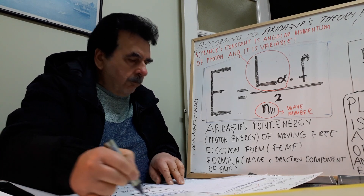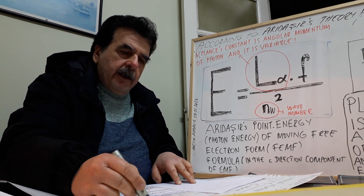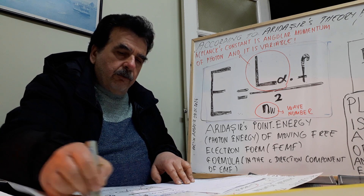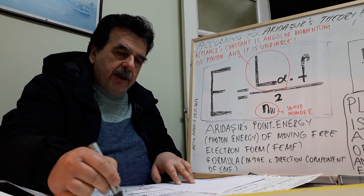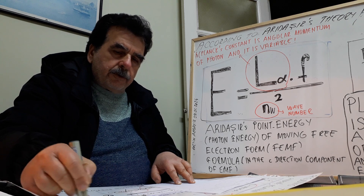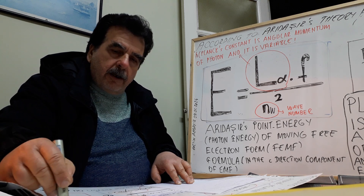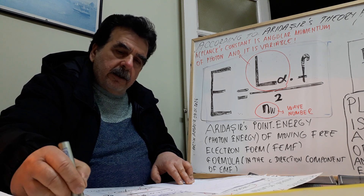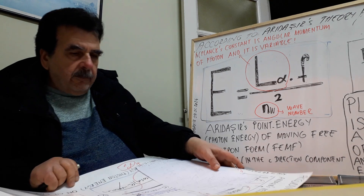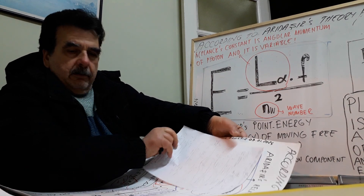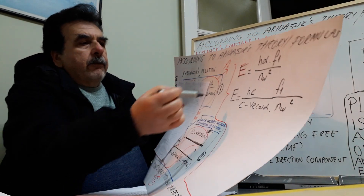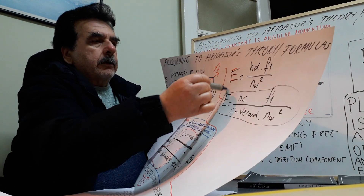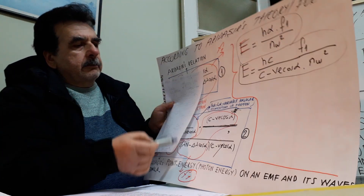From this, we can write: F1 equals H multiplied by F1, divided by squared wave number. Finally, we can write: H·c divided by (c minus cosine alpha), divided by squared wave number, multiplied by F1. Finally, we can write it like this, or like this.